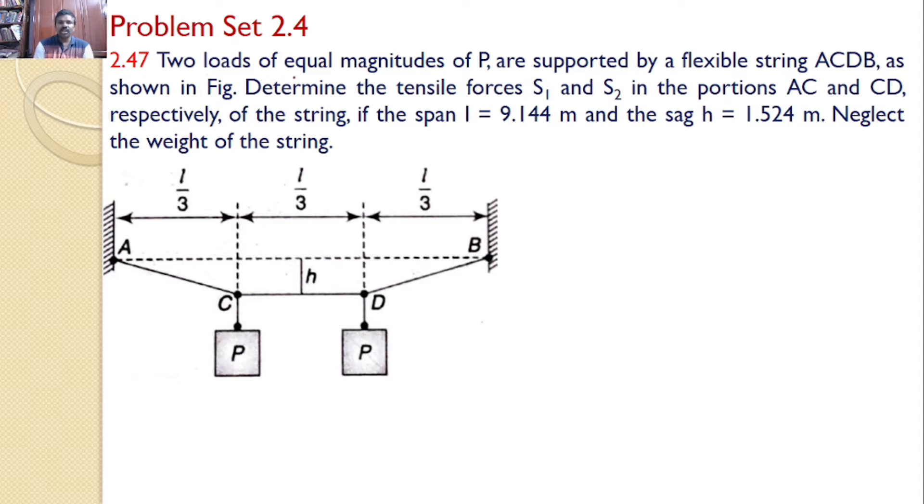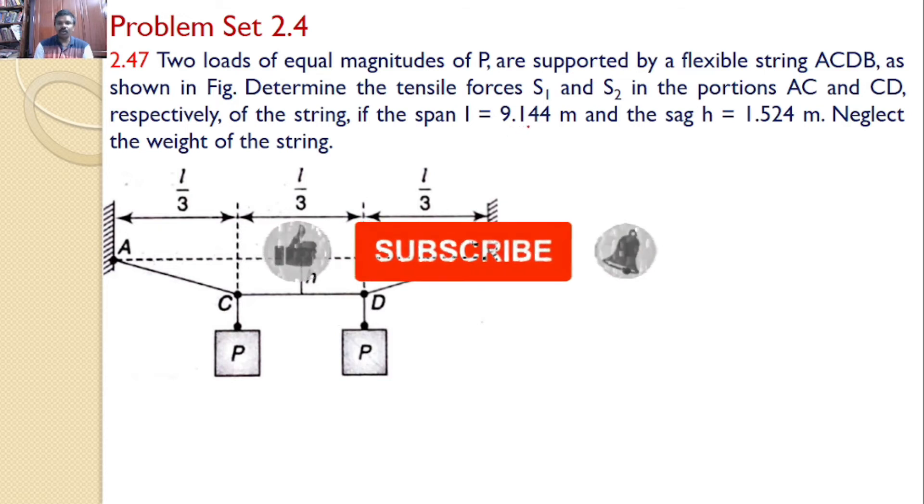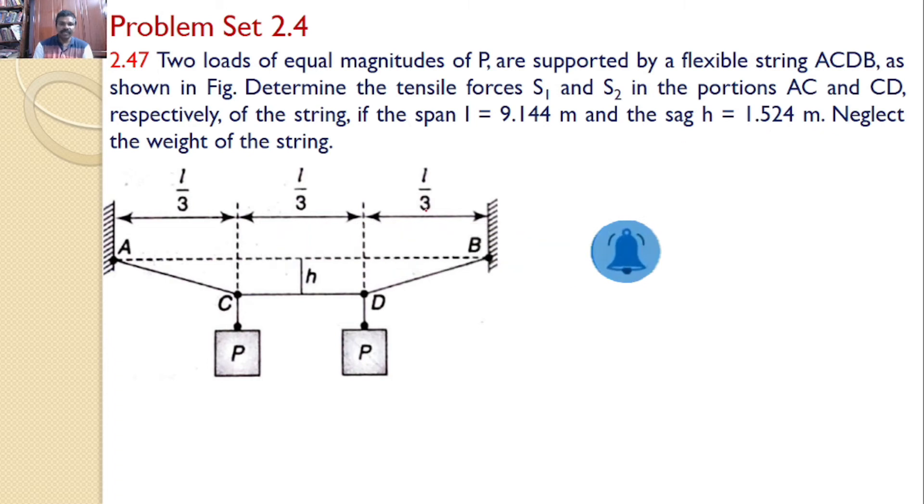Two loads of equal magnitudes of P are supported by a flexible string ACDB as shown in the figure. Determine the tensile forces S1 and S2 in the portions AC and CD respectively if L equals 9.144 meters and h equals 1.524 meters.